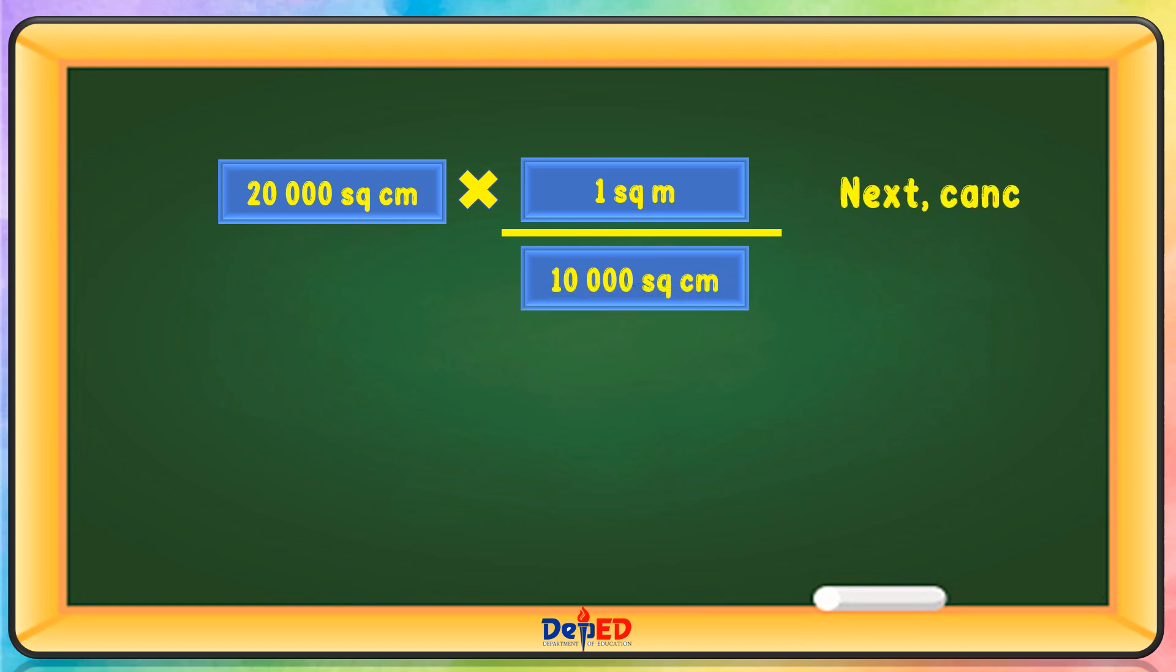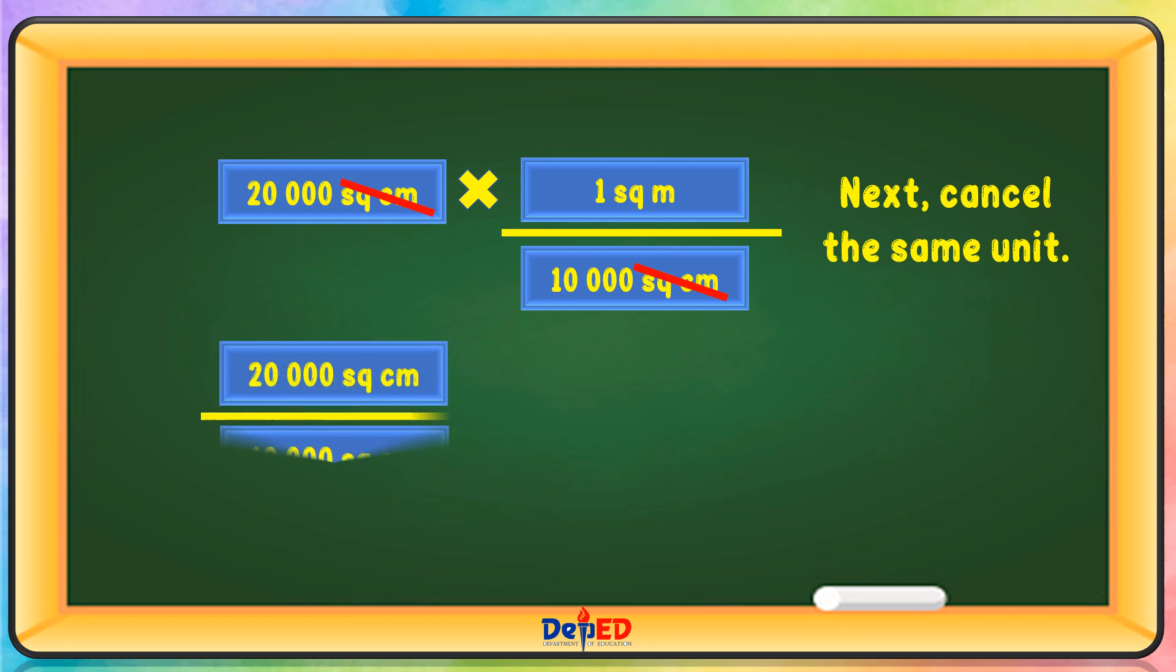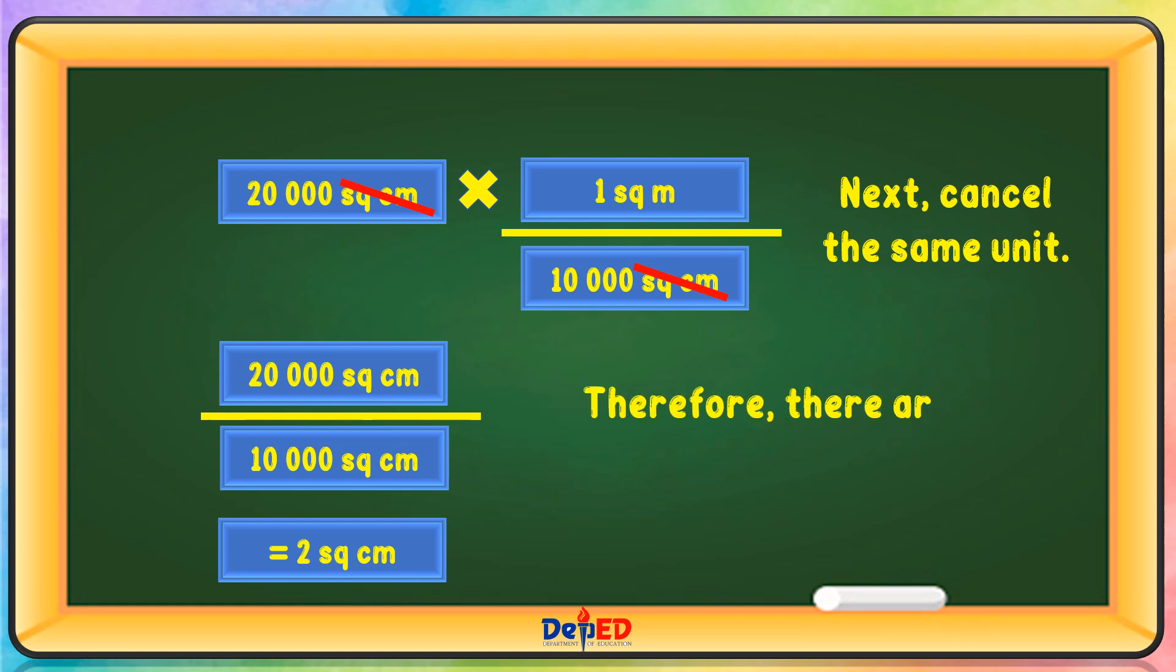Next, cancel the same unit. 20,000 square centimeters divided by 10,000 square centimeters is equals to 2 square centimeters. Therefore, there are 2 square meters in 20,000 square centimeters.